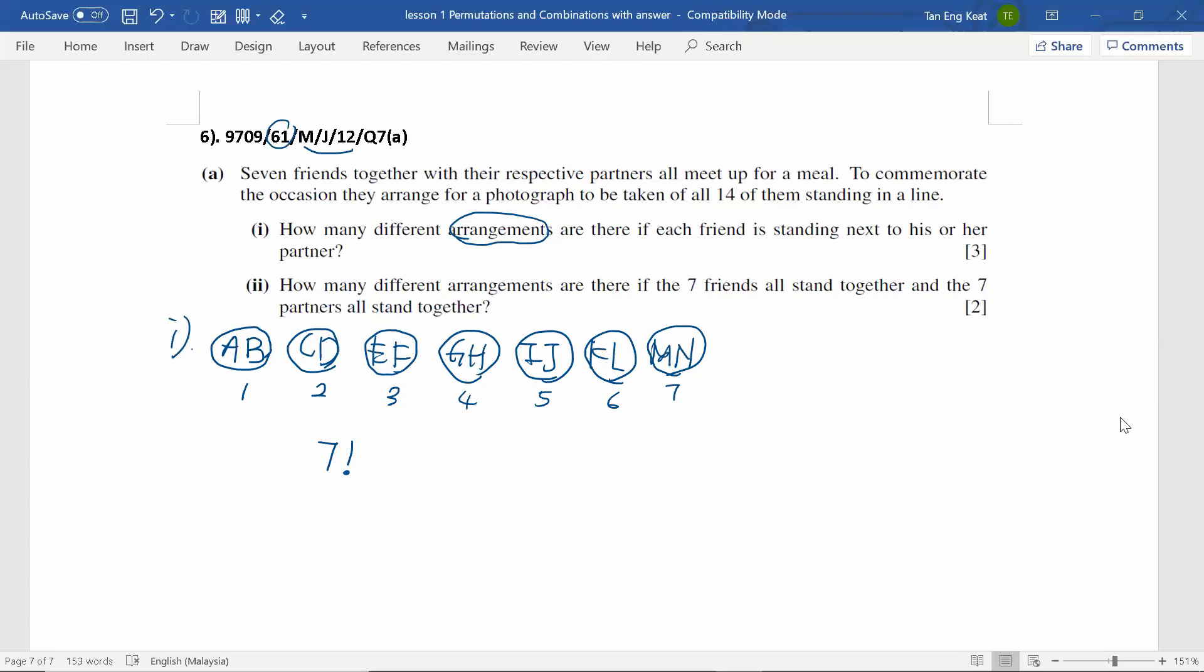And don't forget, while A and B, they are grouped as one object, they can still arrange among themselves. So, it has two factorial ways to arrange among themselves. At the same time, CD has two factorial ways and so on for EFGH. So, by using multiplication rule, we multiply all these together and we will have seven times of two factorial multiplied together. You also can write it down as seven factorial multiplied with two factorial to the power of seven.